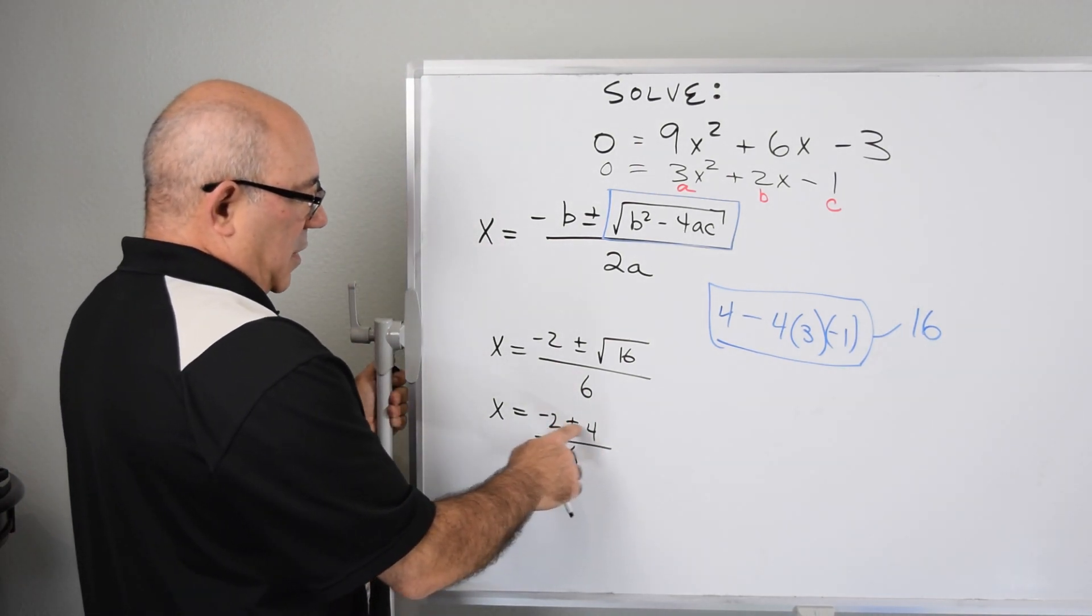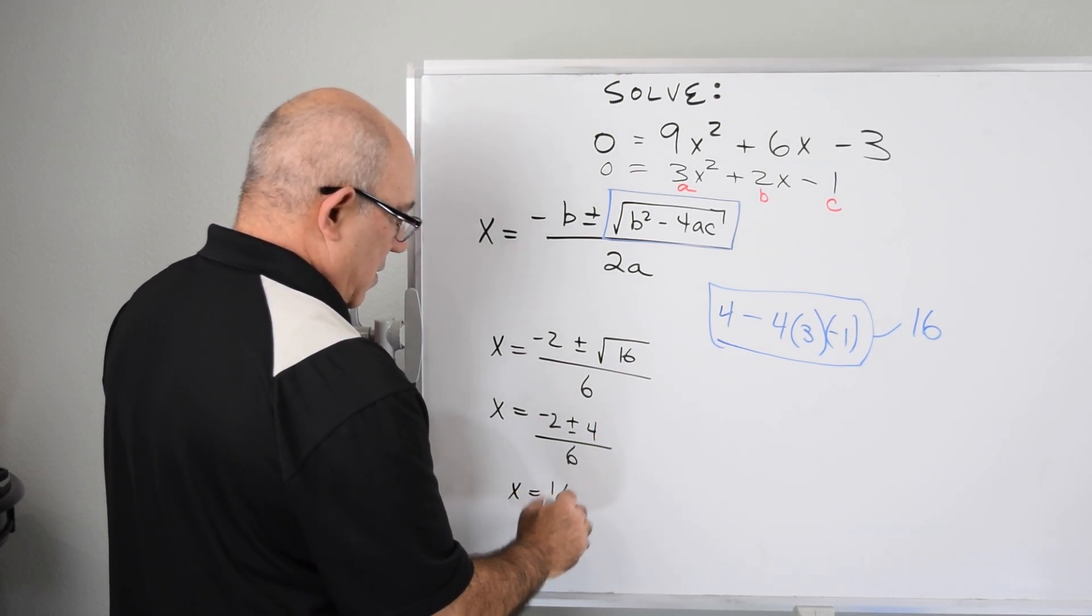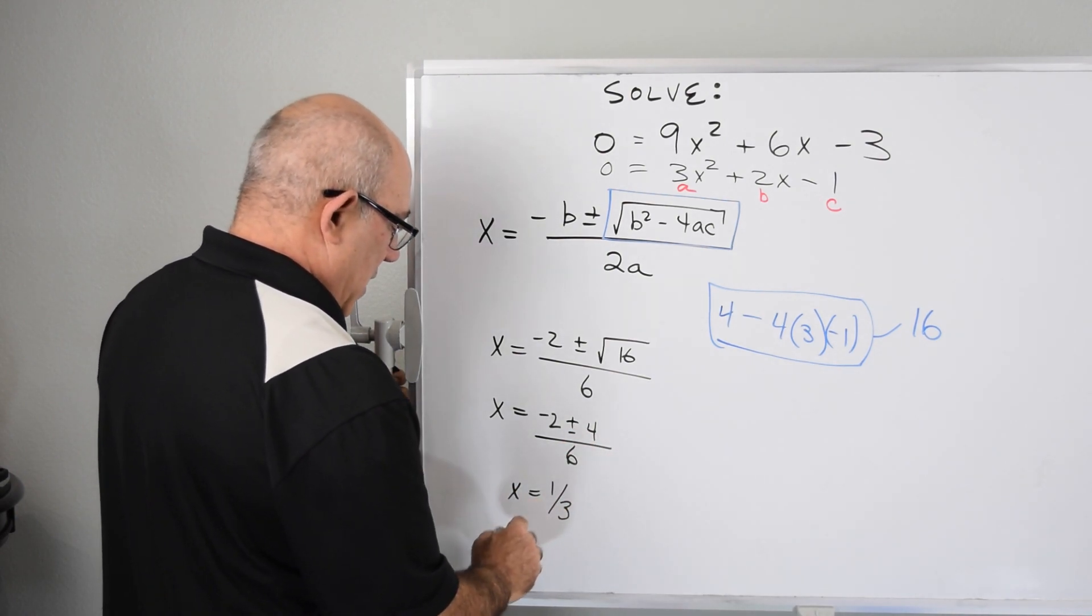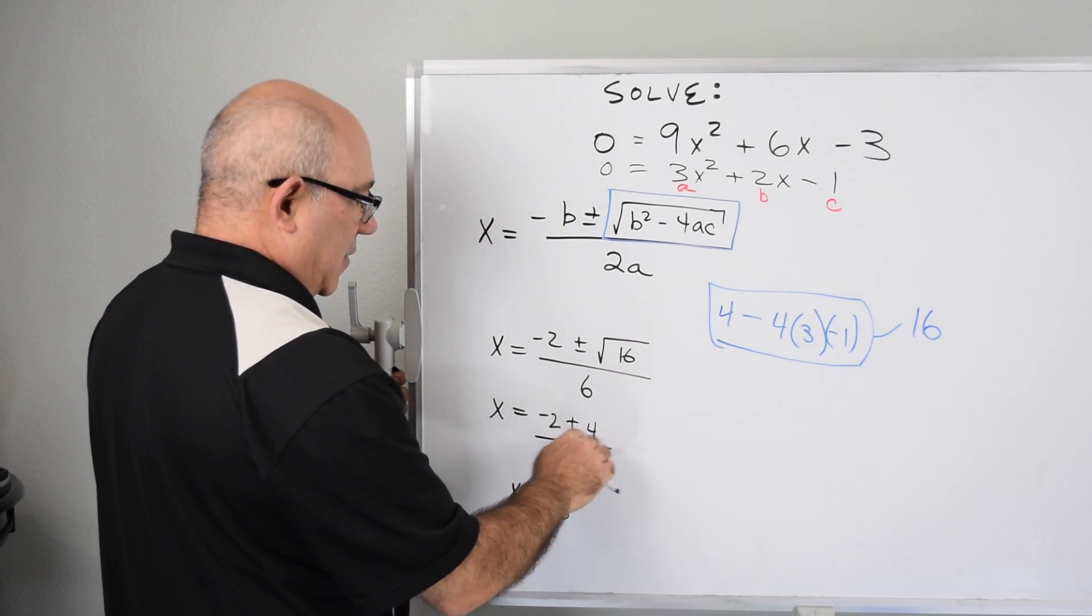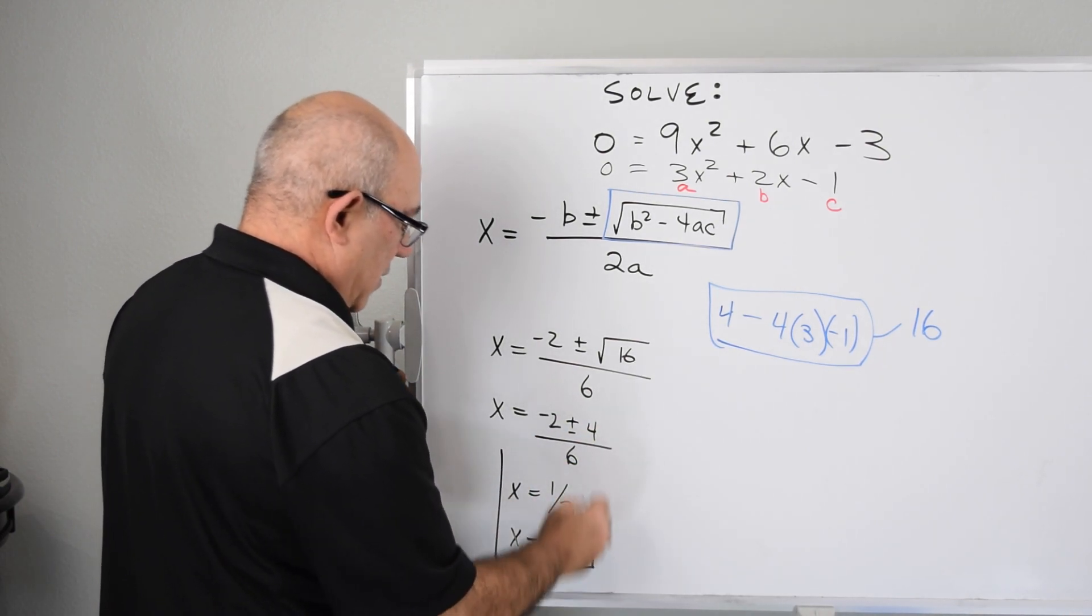So if this is plus, we have 2 over 6. So we have x equals 1 third, because this will factor, this will be 2 over 6. That's 1 third. And then x, if this is minus 4, we have minus 6 over 6. And that's minus 1. And that's our answer.